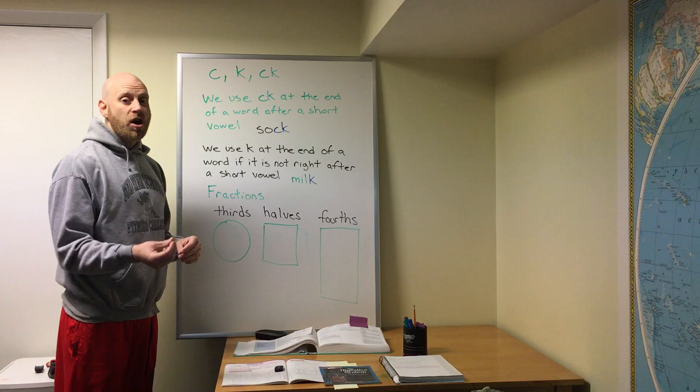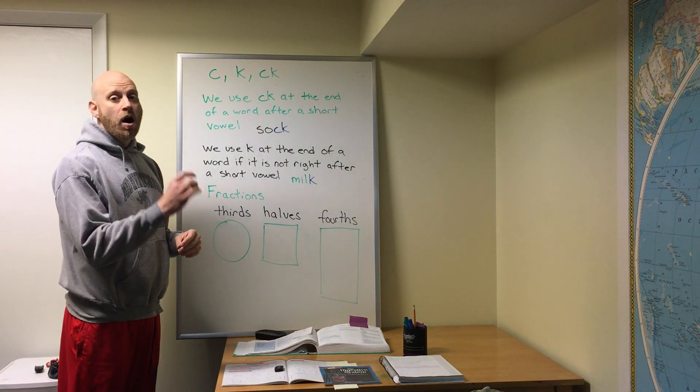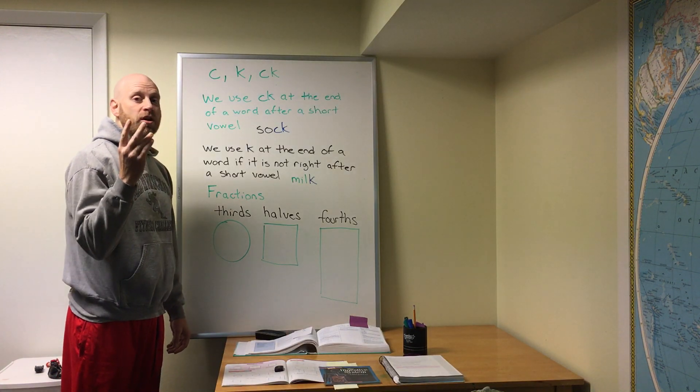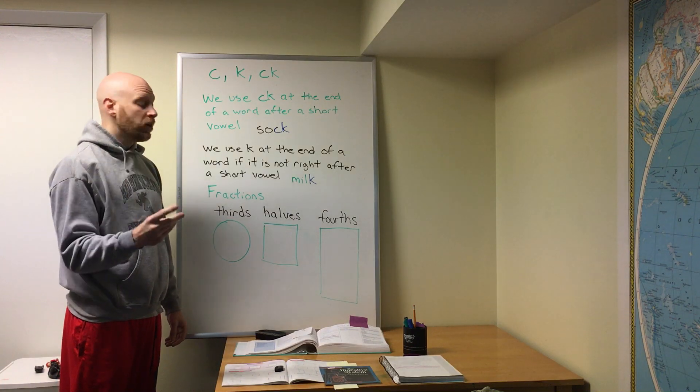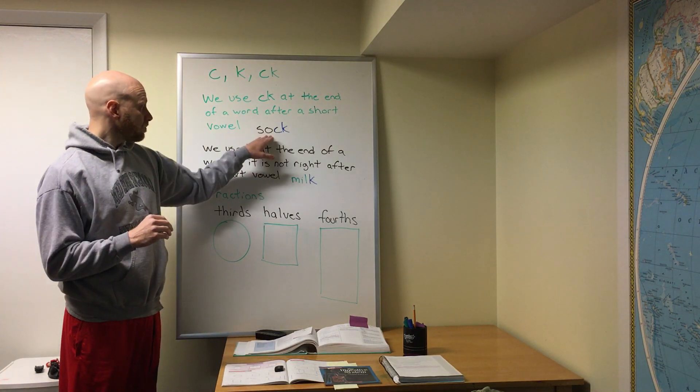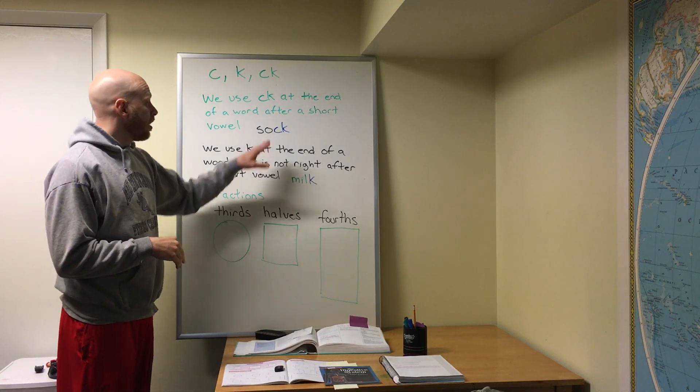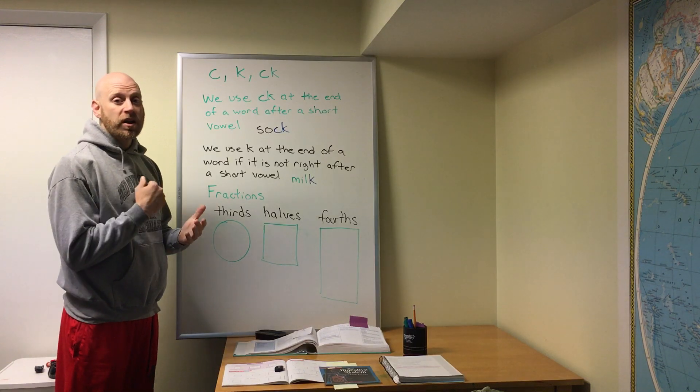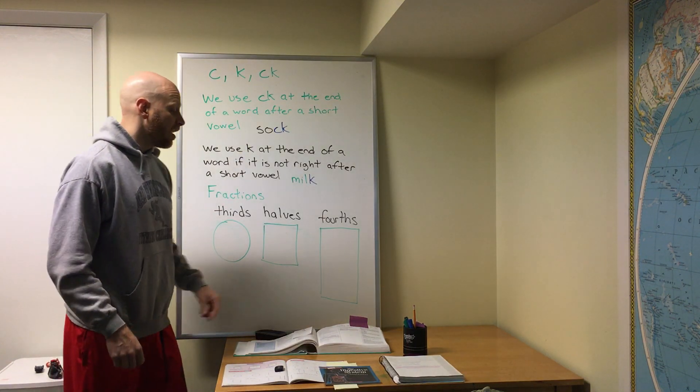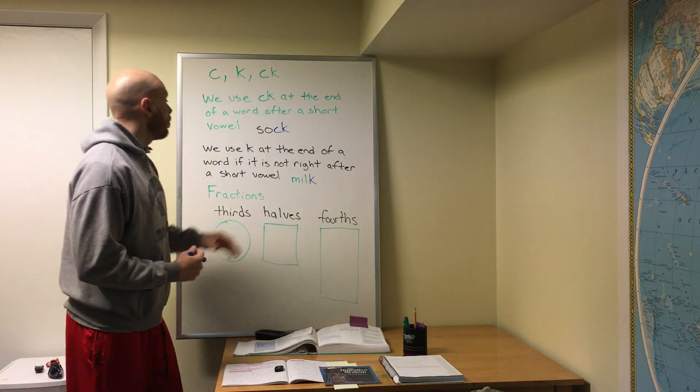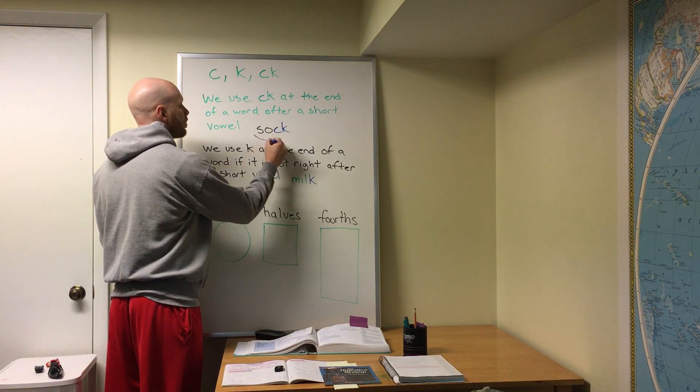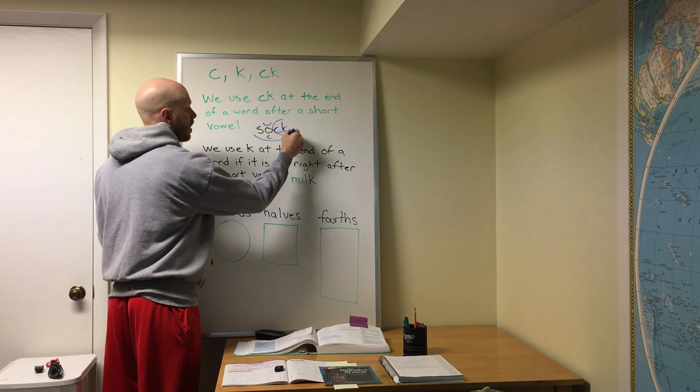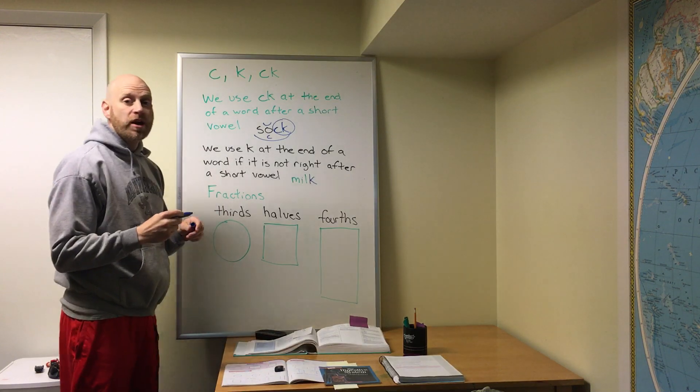So for the CK, we use CK at the end of the word after it comes after a short vowel. So like sock, we hear s, ah, and then we're gonna put our two fingers together, that's those two sounds together. K, s, ah, k. Sock. That's a short O sound, and because it's a short O sound and the K sound comes right after it, we're gonna use CK. So sock, one scoop, closed syllable. Mark it off. Our CK comes right after that short vowel.